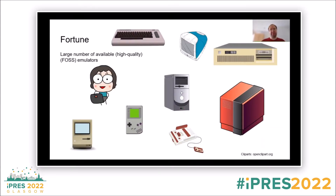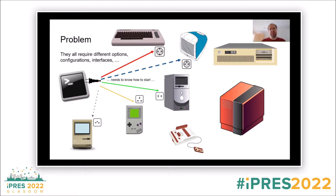The big fortune we have is that we have a large number of available emulators, most of them free and open source software and very high quality. The single emulators do very well at emulating their single platforms. The problem we now face is that all of these emulators have different configuration options, different interfaces, and different ways to start them and to later interact with them. For example, if you want to change the disk in your optical drive, you might have to use different commands for QEMU, and there might be a different command for some other emulator — if that emulator supports changing disks during runtime at all.